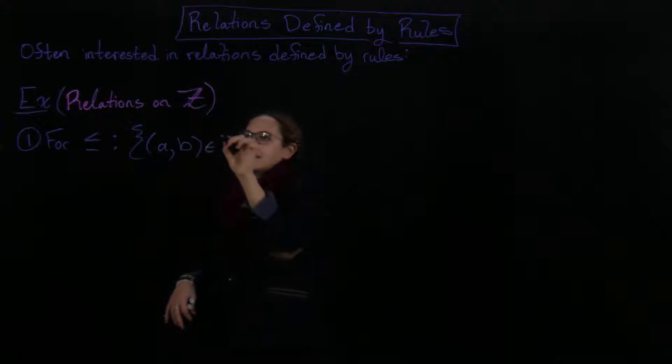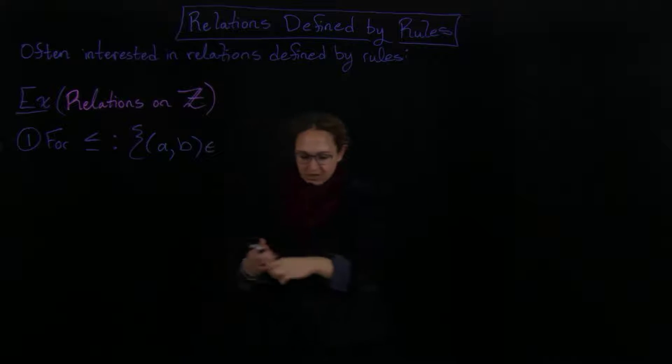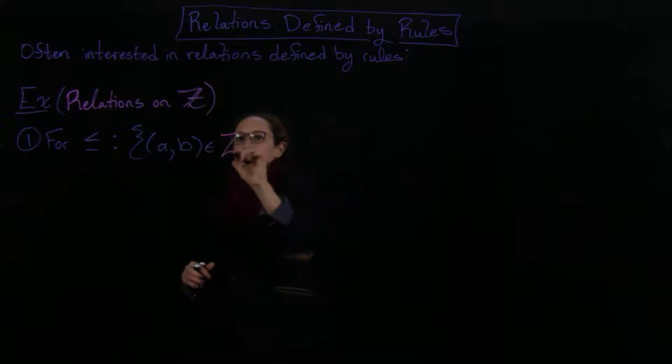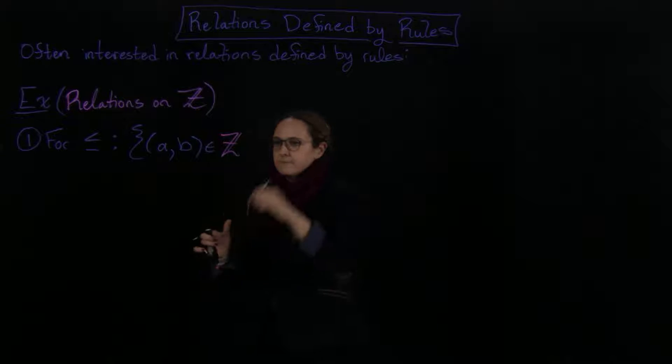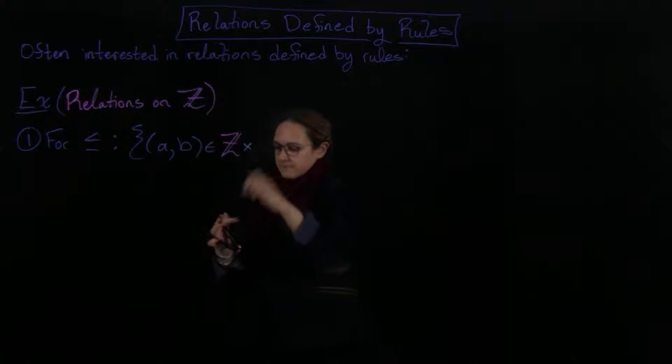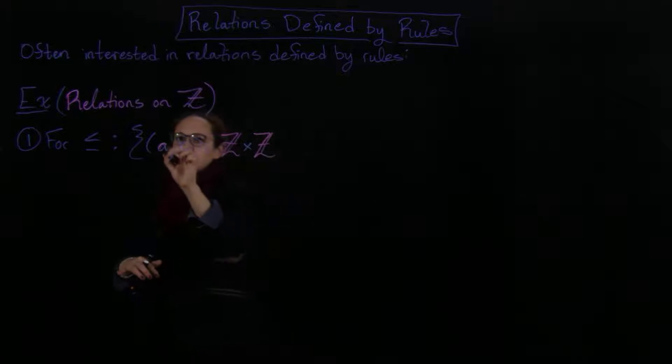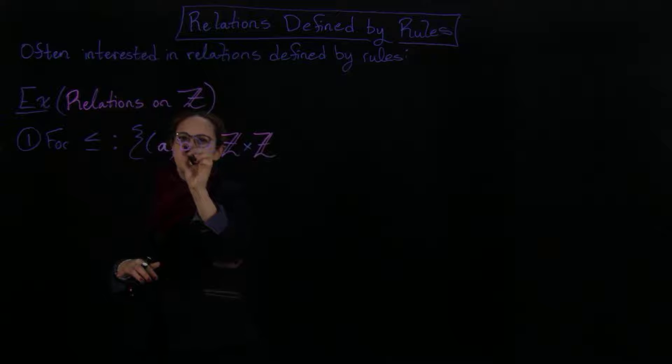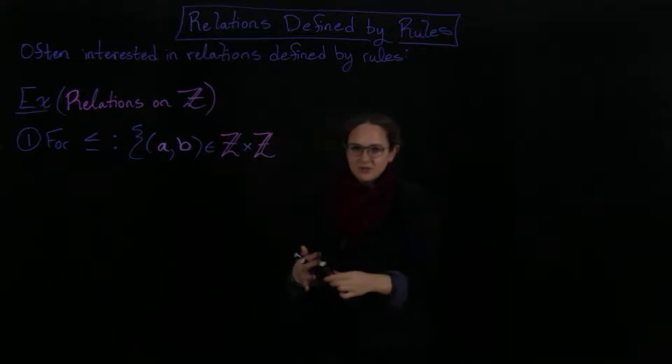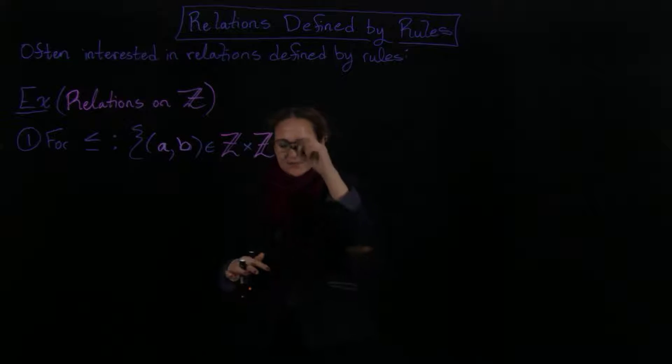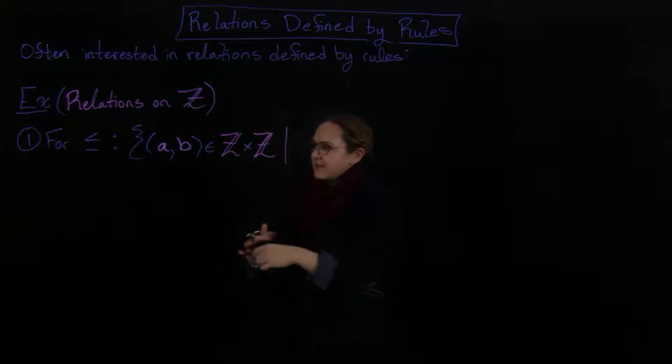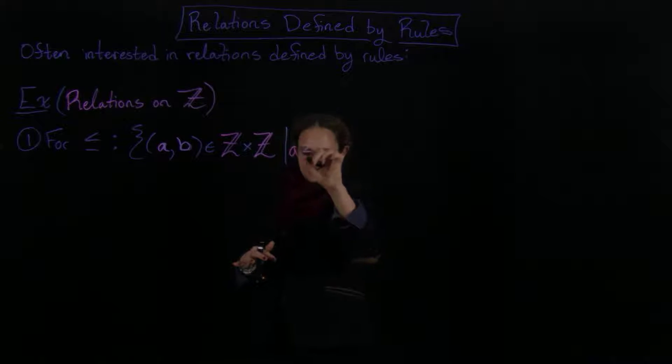Right, so it's the integers cross the integers. Maybe let's put this as A, B. So we're talking about the integers cross the integers satisfying that. And then we write the first one as less than or equal to the second one.